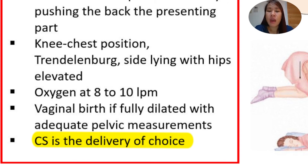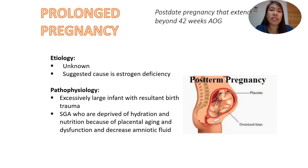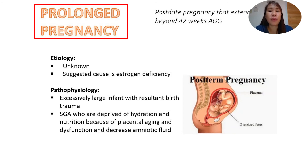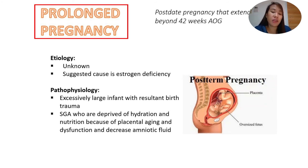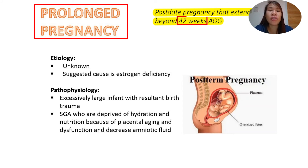Remember, umbilical cord prolapse is an emergency situation. I hope we understand what to do when there is an umbilical cord prolapse. Now, another condition we're going to discuss in this short lecture is prolonged pregnancy. From the word 'prolonged,' it means the pregnancy has exceeded the expected time inside the uterus. We call this post-dated pregnancy — a pregnancy that extends beyond 42 weeks age of gestation. Remember, it's not 40 weeks; it's 42 weeks age of gestation.